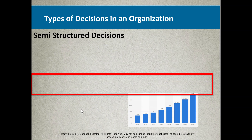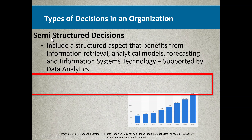Now let's move on to semi-structured decisions. Semi just means it's not perfectly structured — there could be some parts that aren't structured because there could be a variable component. Every decision would be structured, but there could be some kind of variance that influences the decision within the structure. This would include structured aspects that benefit from information retrieval — information and data can change, and as that data changes, we can apply it to a structure and make different decisions based on the variance.